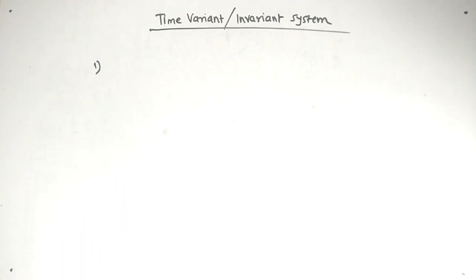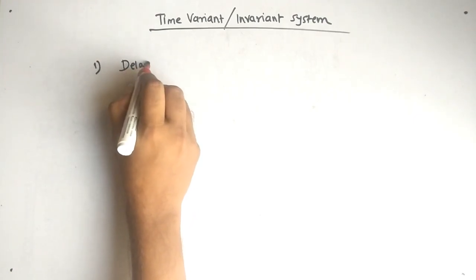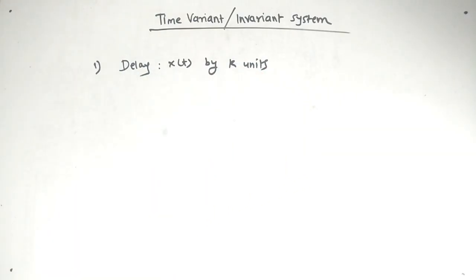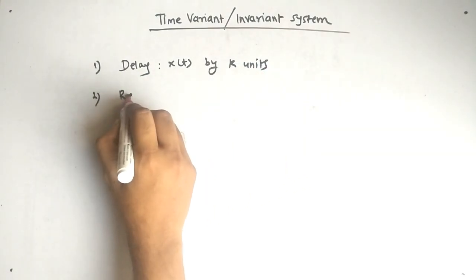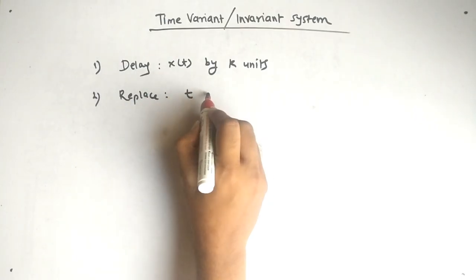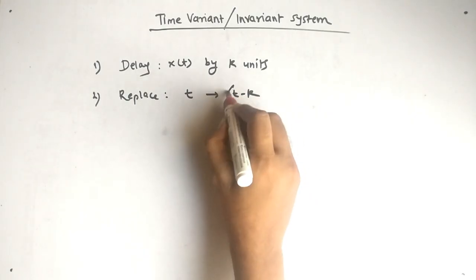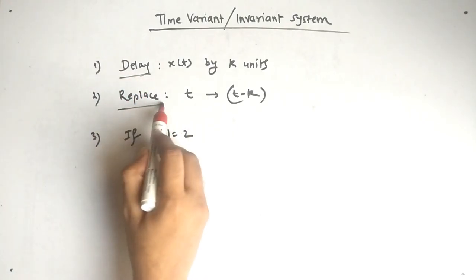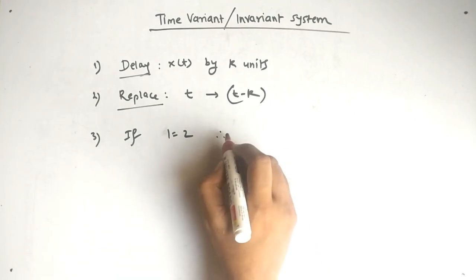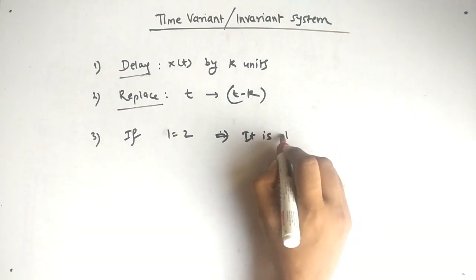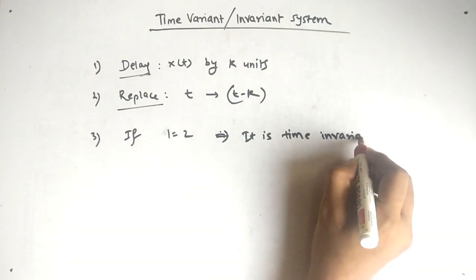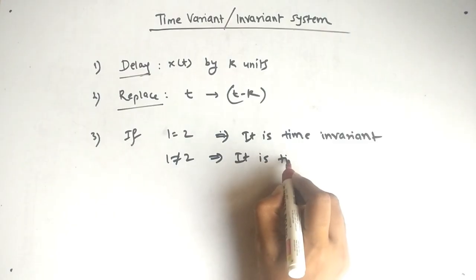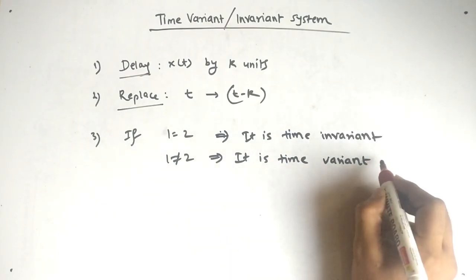We have to follow only two steps. First, we have to delay x(t) by k units. Second, wherever you see t, replace it by t minus k. Now if step one (delay) equals step two (replace), then it is a time invariant system. If one is not equal to two, it is a time variant system.